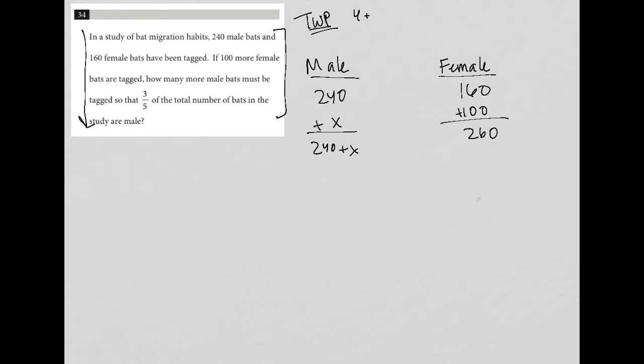How many more male bats must be tagged so that three-fifths of the total number of bats in the study are male? Well, this three-fifths of the total number of bats in the study are male is another part of my translation. How do I do that? So three-fifths of means to multiply, so three-fifths times the total number of bats. Well, what's the total number of bats?